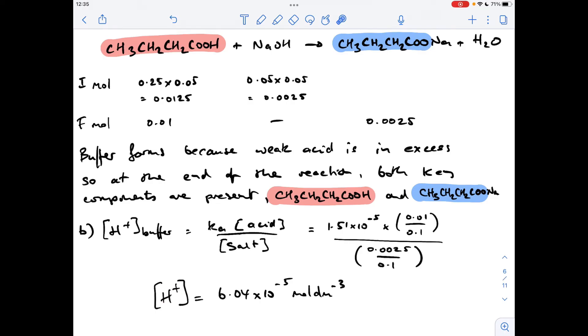So that gives us an H-plus concentration in the buffer of 6.04 times 10 to the minus 5 moles per decimeter cubed. So all we need to do now is minus log that to get the pH. We get a calculator value for the pH of that, and it wants it to two decimal places, which is 4.22.